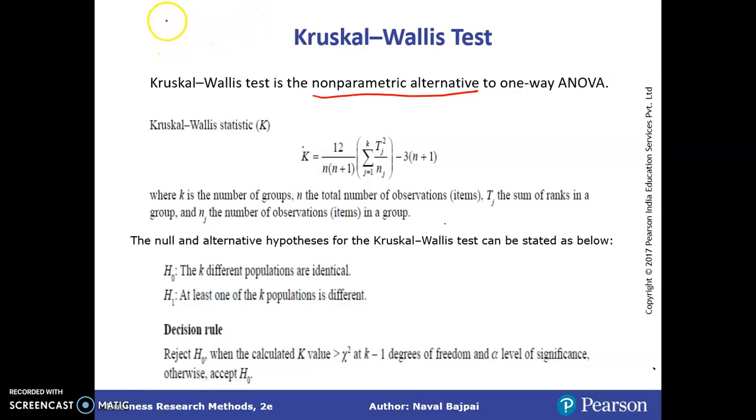For example, we have collected data for three samples, three income groups say low, medium, high, and for these income groups we have calculated the level of satisfaction. Income level low, medium and high, and in each case we have calculated the satisfaction level.